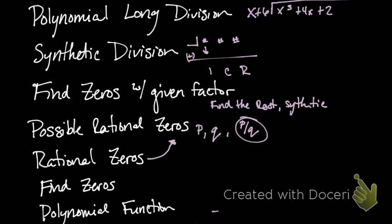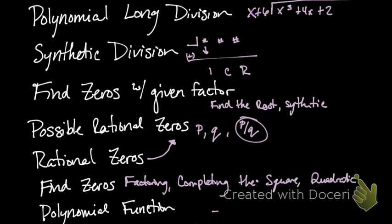In a section that says find zeros, that's an all for all kind of thing where you guys can find the zeros however you want to. So that's like either factoring or completing the square or the quadratic or whatever or something like that, right?